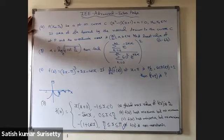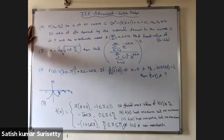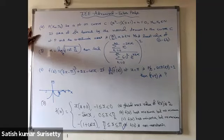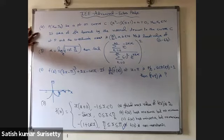Fourth problem: let P(x₀, y₀) be a point on the curve x² − 11(y+1) + 4 = 0, where x₀ and y₀ are natural numbers. If the area of the triangle formed by the normal to the curve at P and the coordinate axes is of the form a/b where a and b are natural numbers, find the least value of a − 6b.